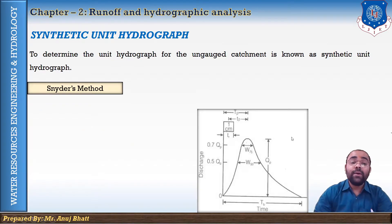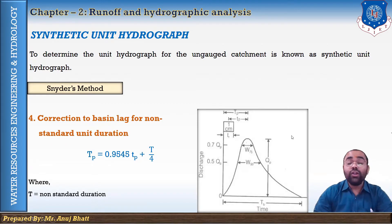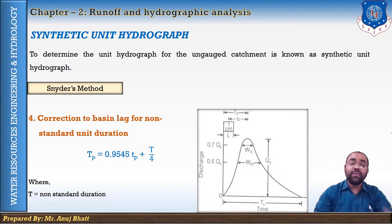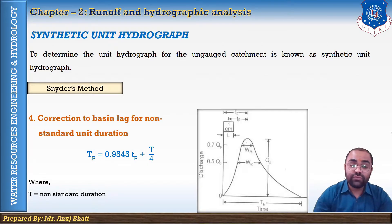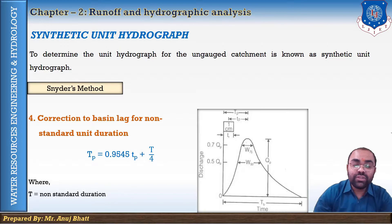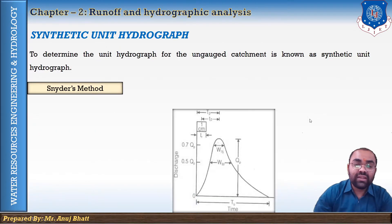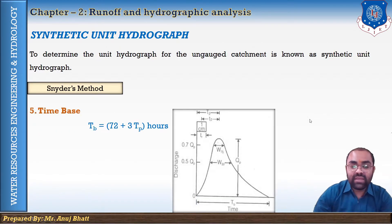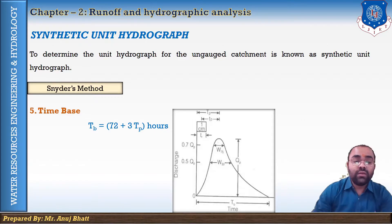The correction to the basin lag for non-standard unit duration is capital Tp, and the formula is: Tp equals 0.9545 times (tp plus T divided by 4), where capital T is the non-standard unit duration. For the time base, the formula is: tb equals 72 plus 3Tp, and this value is in hours.